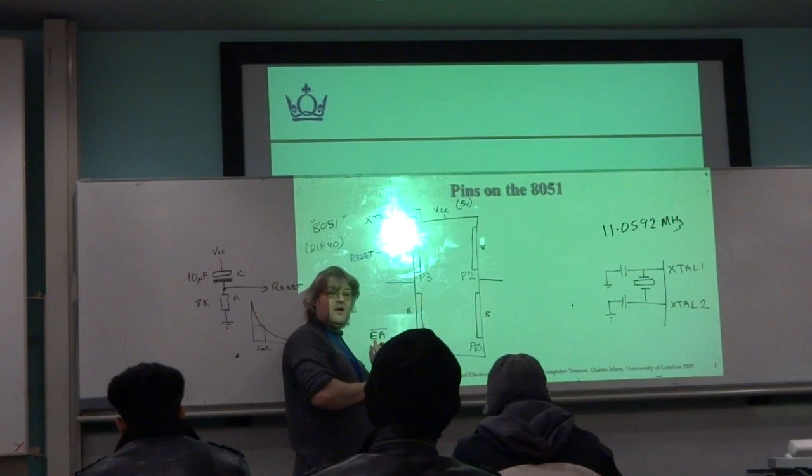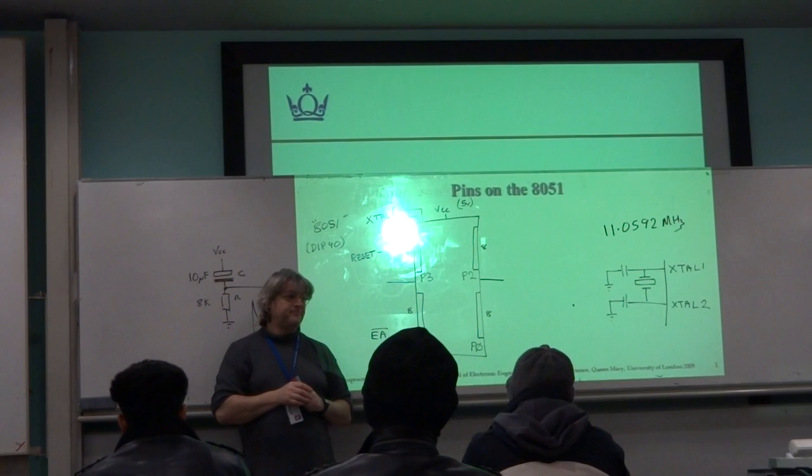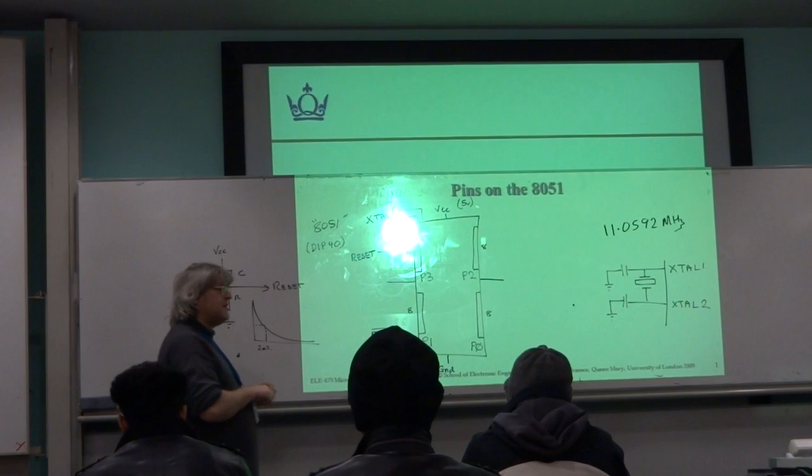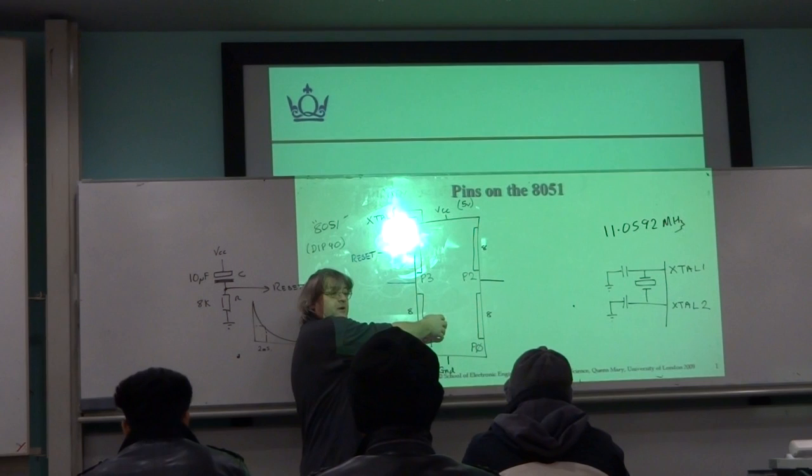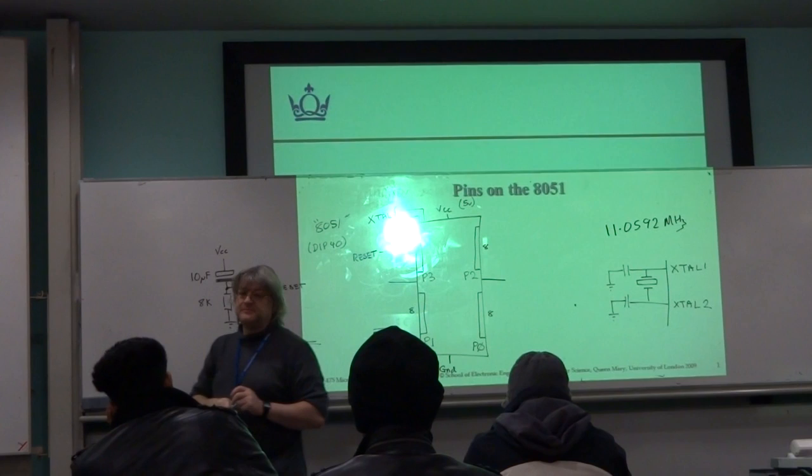It is this pin that determines where the microcontroller goes to find the program memory. If this pin is low, even if there is internal program memory, it will be ignored, and the microcontroller will look outside of itself to find the program memory, no matter what. If this pin is high, it will look inside for the program memory, and then it depends on the manufacturer what happens. If it's got say 4K of internal program memory, and all your code fits within that 4K, it will only do things internally. If you try and extend beyond that, it may well look for program memory outside as well.